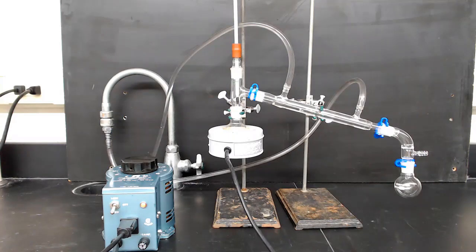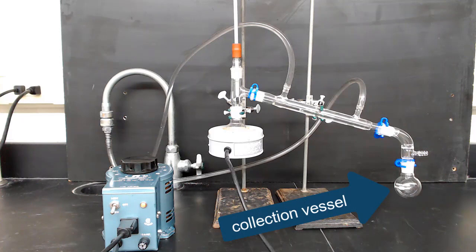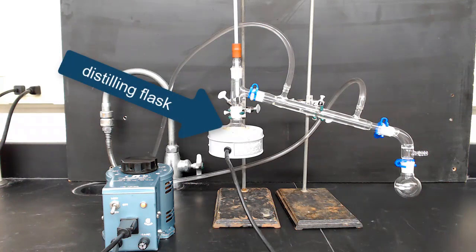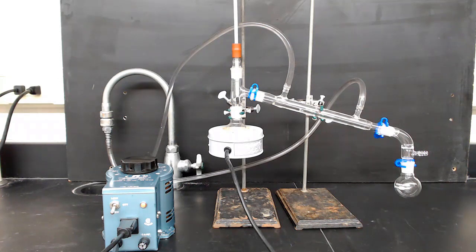You can change the collection vessel as frequently as needed to collect different fractions. In a typical distillation, you'll have one or more liquid fractions that you collect, and then there'll also be a residue left in the distilling flask. In today's experiment, tert-butyl chloride is fairly pure and will only collect one fraction.